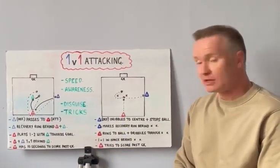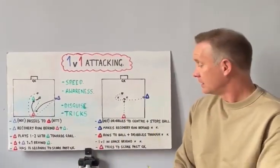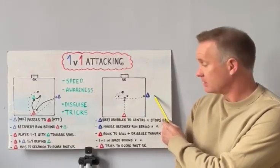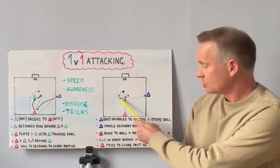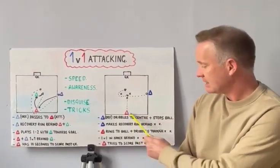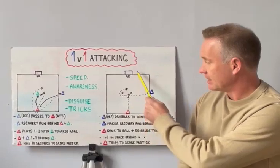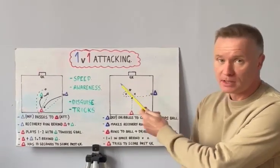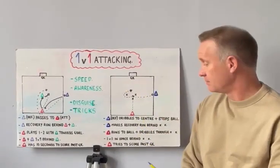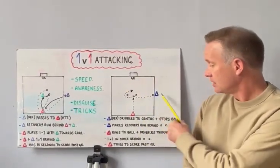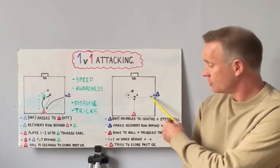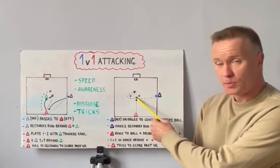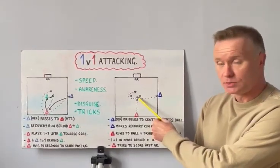Over here we've got another 1v1. Again, we've got the defender on the side of the pitch and we've got two cones here forming a gate, and we've got an attacker. Again, a goal and a goalkeeper, but mini goals can be used. The defender is going to dribble the ball as fast as they can and stop it between the two cones.